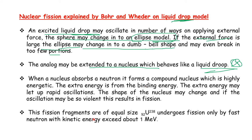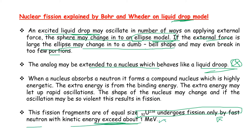The fission fragments may be of equal size. Uranium-238 undergoes fission only by fast neutrons with kinetic energy exceeding about 1 MeV. This is the liquid drop model of nuclear fission, based on oscillations driven by binding energy.